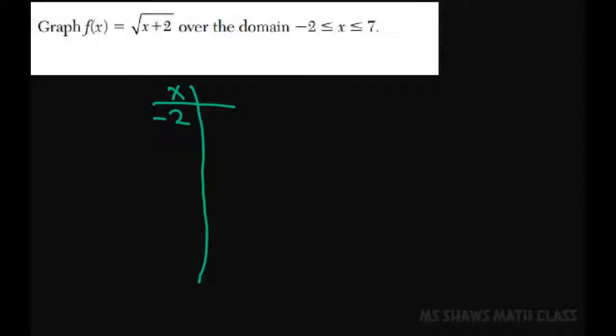Hi everyone, we're going to graph f(x) equals square root of x plus 2 over the domain negative 2, basically where x is between negative 2 and 7 inclusive.